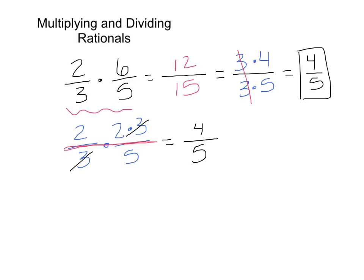You're definitely going to want to factor first when you're looking at expressions as opposed to just numbers. So what about dividing? Dividing isn't all that much different from multiplying. Let's look at a fraction: 15 over 7 divided by the fraction 45 over 14. Remember that when you're dividing by a fraction, what you're really doing is multiplying by the reciprocal — the flip of the fraction. So this problem is really 15 over 7 multiplied by the reciprocal, which is 14 over 45.